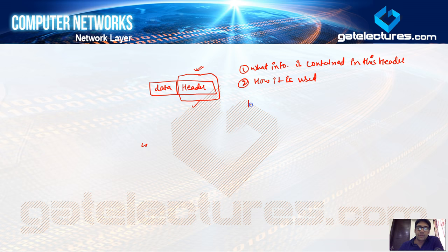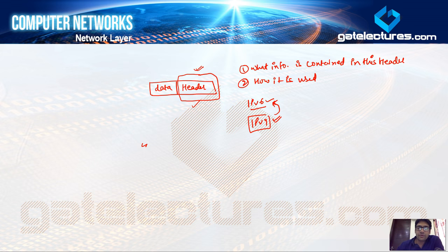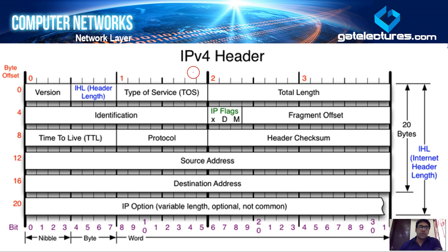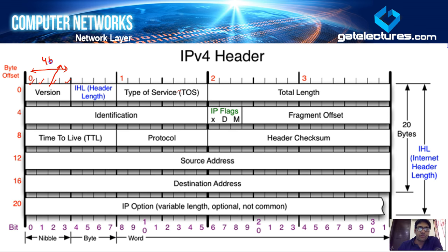Nowadays we have IPv6, which is being implemented, but earlier we used IPv4. We'll start with IPv4 as it is simpler compared to IPv6, and we'll discuss both. The IPv4 header has several fields — the first field is the version field, which indicates whether the packet is IPv4 or IPv6. This version field is four bits long — bit one, two, three, and four.